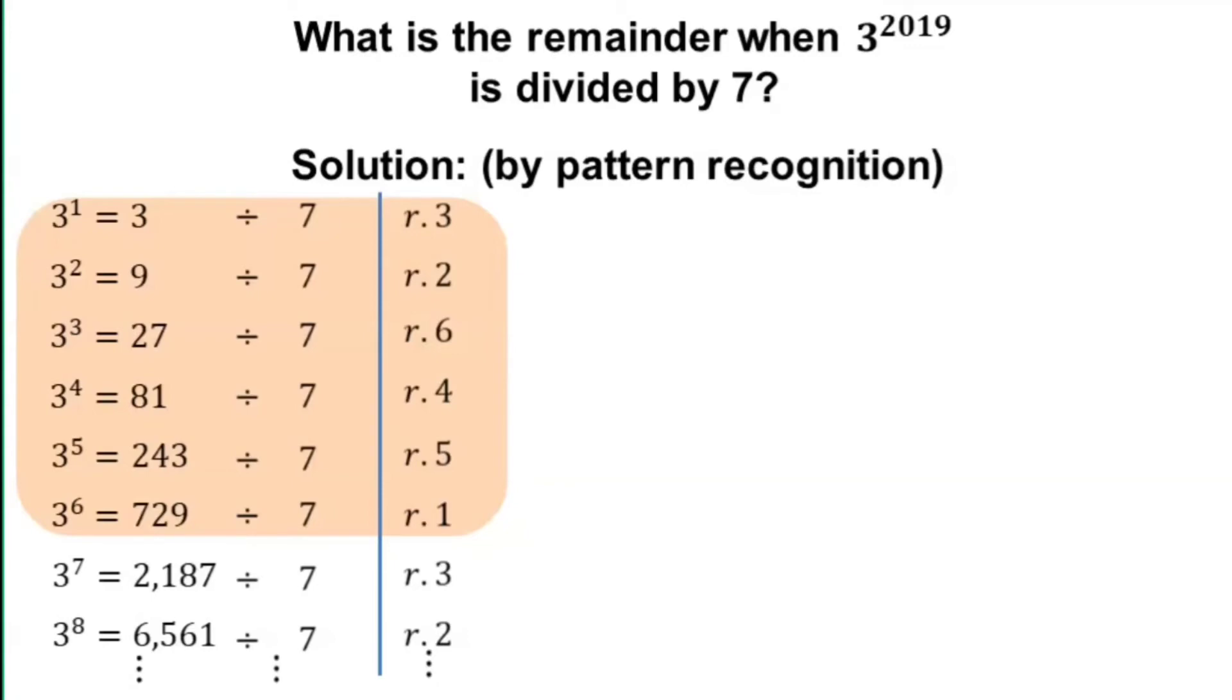This means that in the seventh exponent, the series of remainders would be the same again starting from the first exponent. This repetition of remainders will actually happen every after a multiple of 6. We say that we have a cycle that has a length of 6.